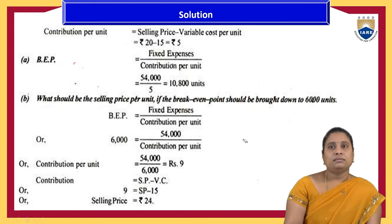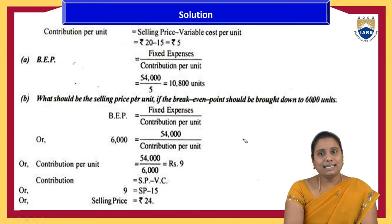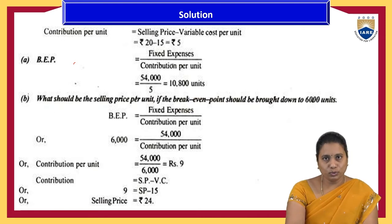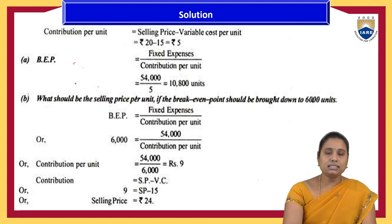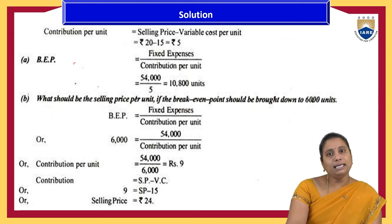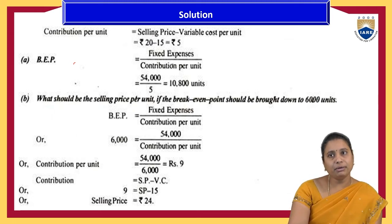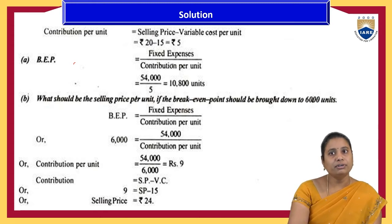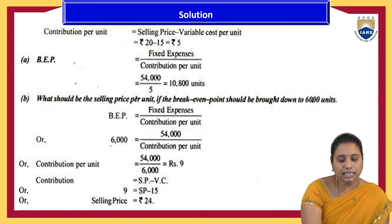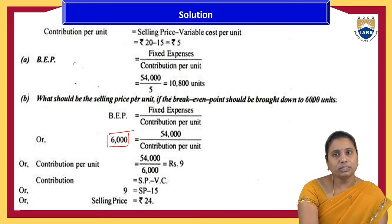The next extension to this problem: at what selling price per unit should the break-even point be brought down to 6,000 units? We already know the BEP formula, and now instead of 10,800 units, they have given 6,000 units.